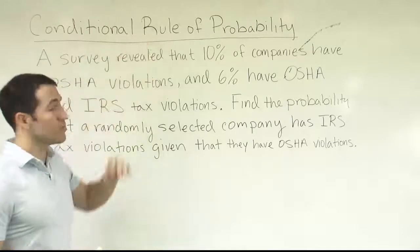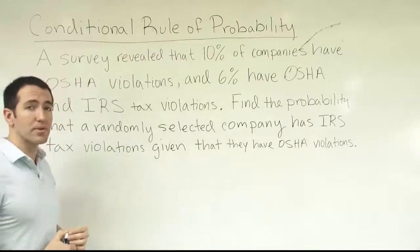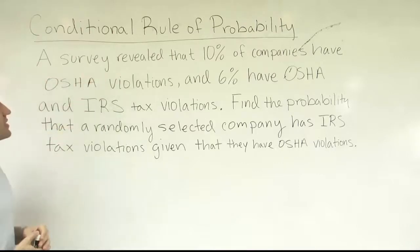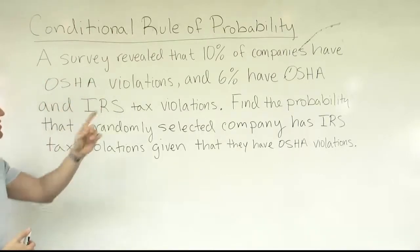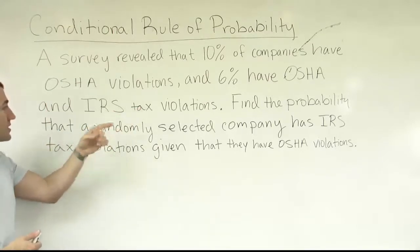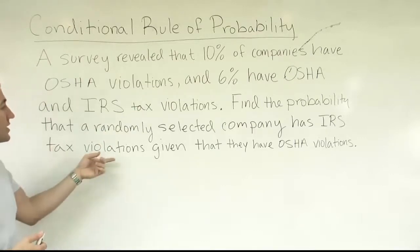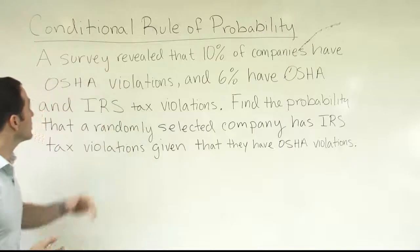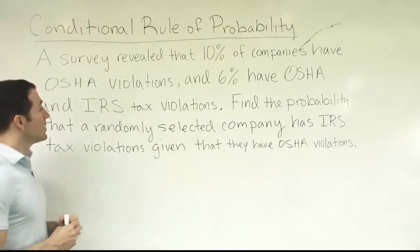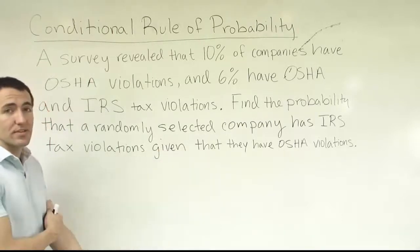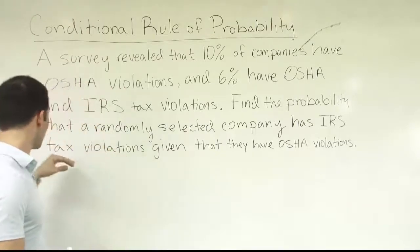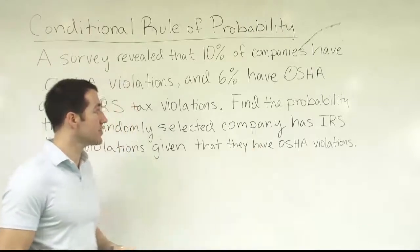The idea of conditional probability is that we're going to make an adjustment to the probability based on some known information. Here's an example problem: a survey revealed that 10% of companies have OSHA violations and 6% have both OSHA violations and IRS tax violations. Find the probability that a randomly selected company has IRS tax violations given that they have OSHA violations. OSHA means a safety violation — something about the job workforce area is not safe — and the tax violation means they're cheating on their taxes.